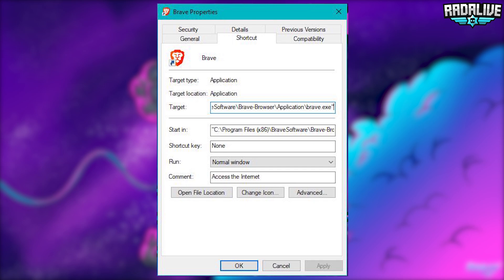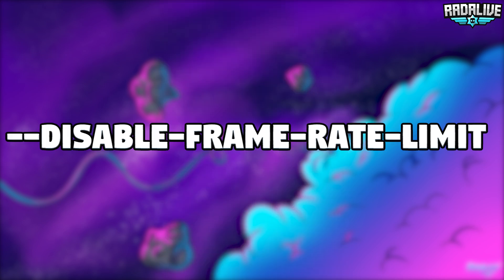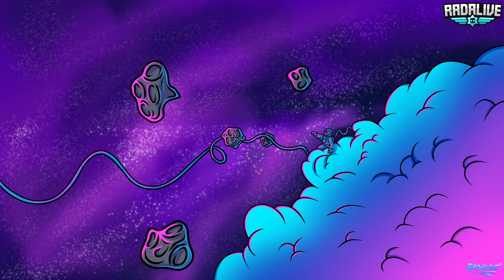All you have to do to get unlimited FPS in your browser is type the code that you see on screen into that target section — it will also be in the description below if you want to copy and paste it. Make sure you paste this after the quotation mark, not before. If you paste it before the quotation mark you will not get the full effect of this FPS boost; paste it afterwards and it's pretty straightforward.